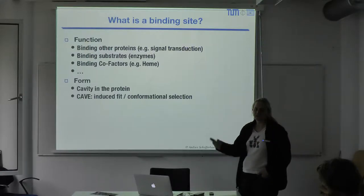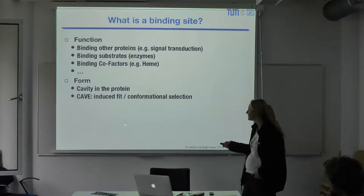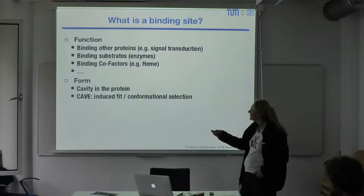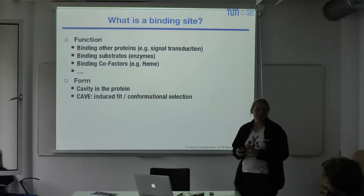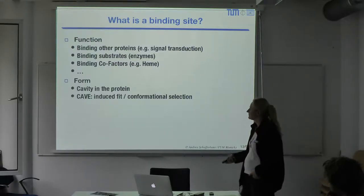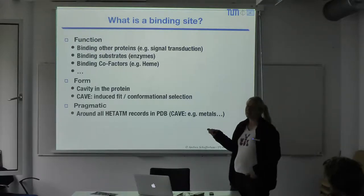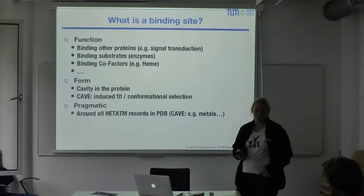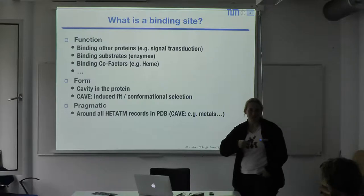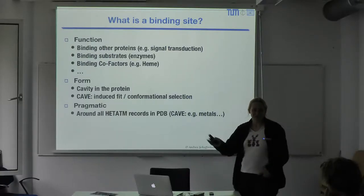The cavity in a protein — we usually assume something binds there, so we call it the binding site. Cavity and binding site are sometimes used interchangeably. You have to be careful because not always can you find a cavity if something binds there, due to the induced fit effect where the cavity only really forms when the molecule is bound. If you want to find a binding site, the easiest way is to just take the PDB file and look for HAT atoms — things surrounding HAT atoms are usually a binding site.